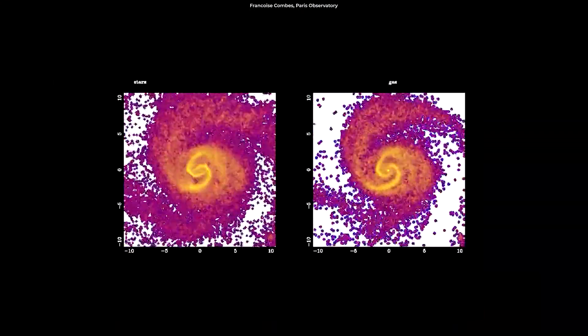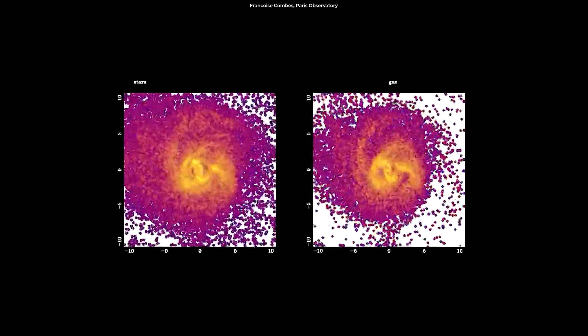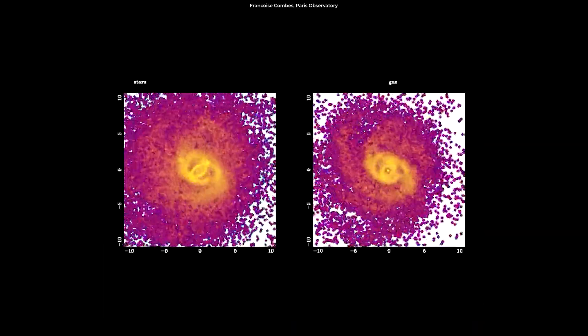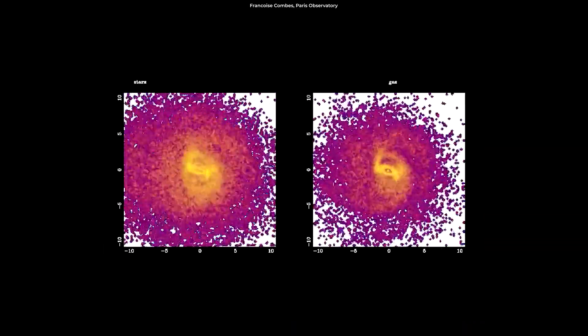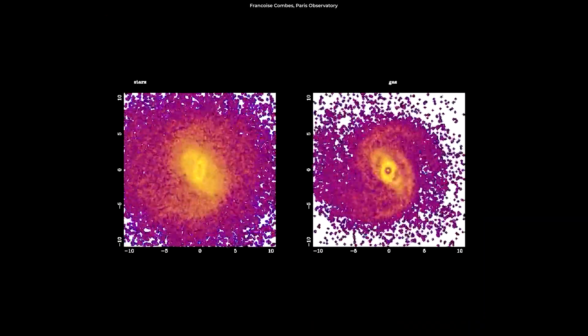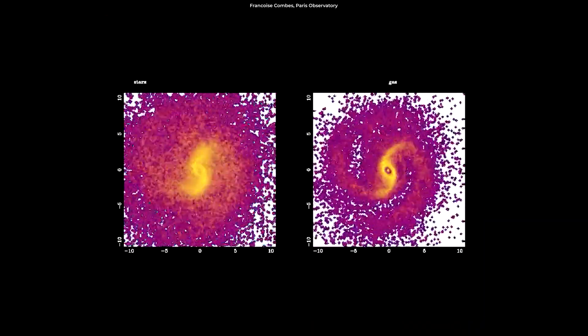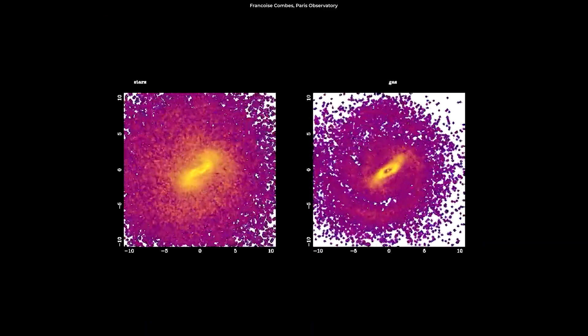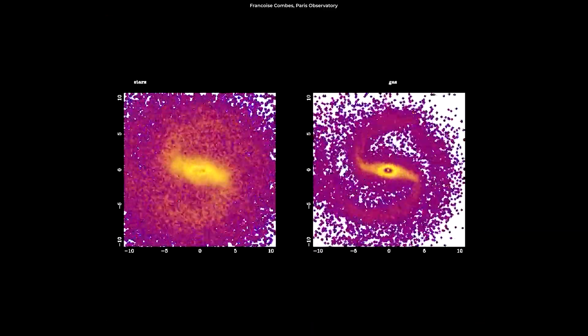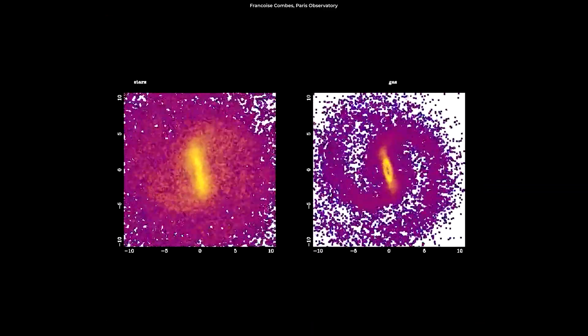Data suggests these bars act a bit like a funnel, pulling matter into the bulge from the disk, fueling star formation at a rate between 10 and 100 times faster than in the rest of the galaxy. This inflow of gas also helps the growth of supermassive black holes found at the center of most, if not all, large galaxies.